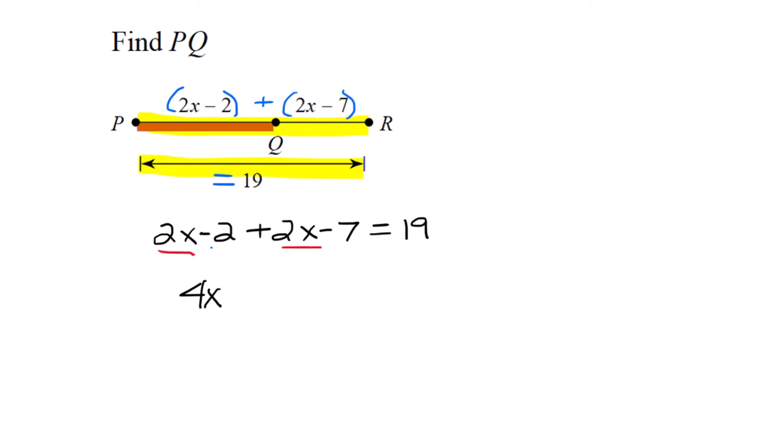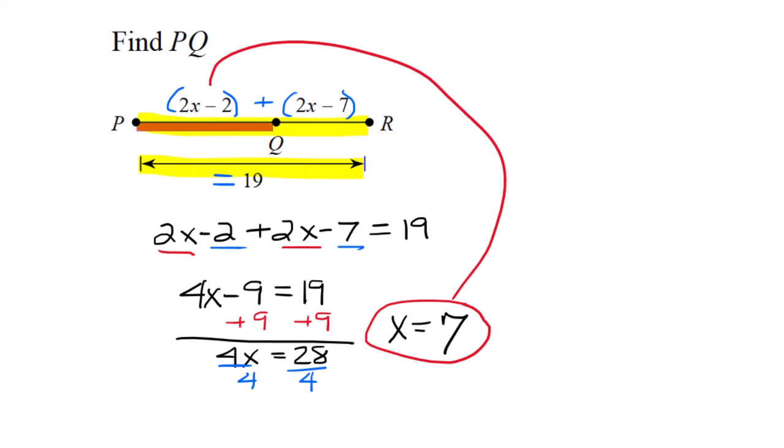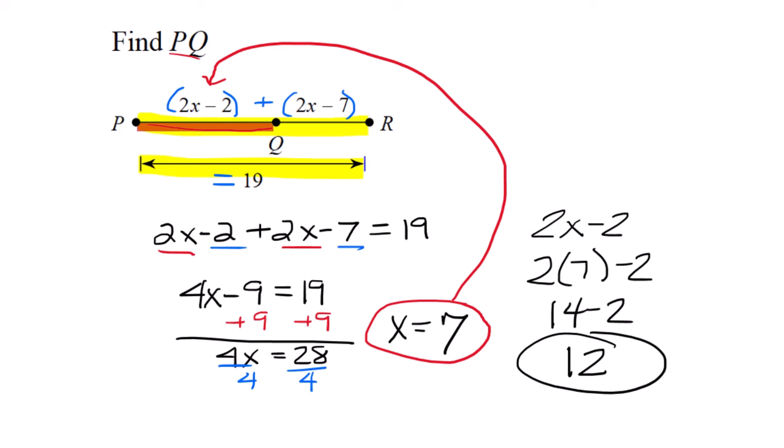Combining like terms, the 2x's go together and constants go together. Add 9 to both sides, 4x equals 28, divide by 4, x equals 7. But they wanted PQ, not x. Substitute back: 2 times 7 minus 2 equals 14 minus 2. PQ is 12.